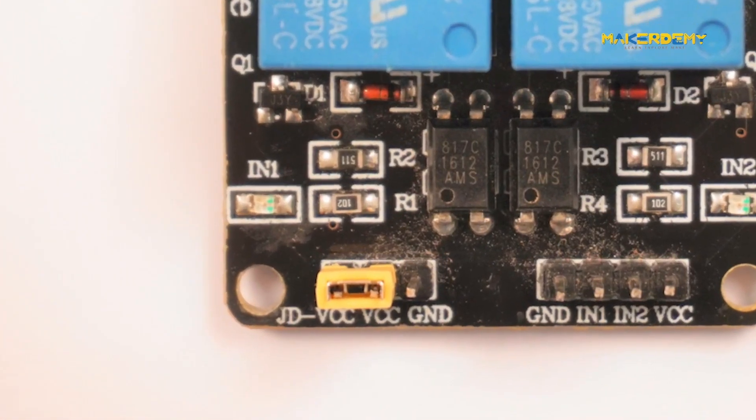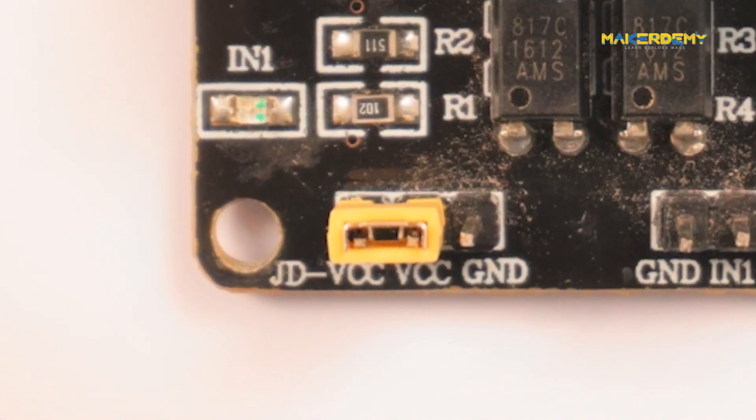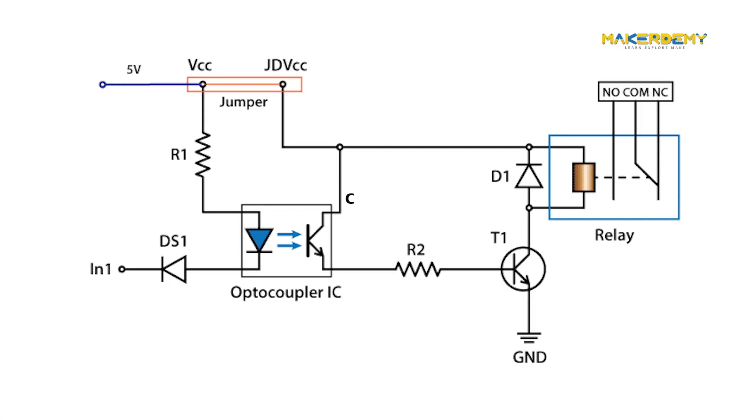You can see that the JD VCC pin and VCC pin is shorted with a jumper by default. If you go back and look at the complete circuit, you can see that the JD VCC is connected to the collector of the photosensitive transistor inside the optocoupler. The jumper is used either to enable or disable the optocoupler from the circuit. If you remove the jumper, the relay stops working. We can also provide voltage to the transistor directly based on the optocoupler used. This is done by supplying the voltage directly to JD VCC after removing the jumper.